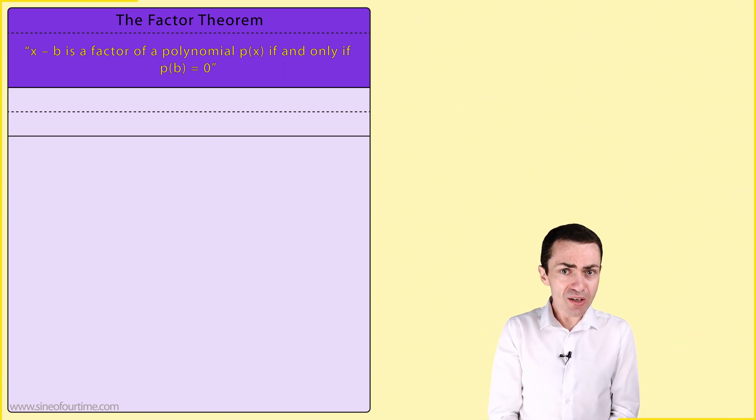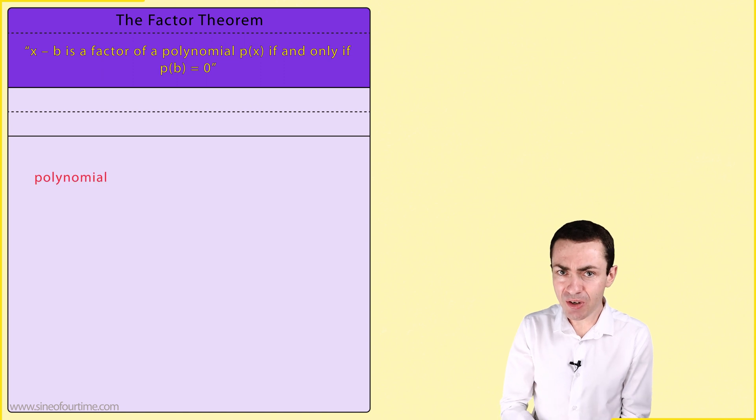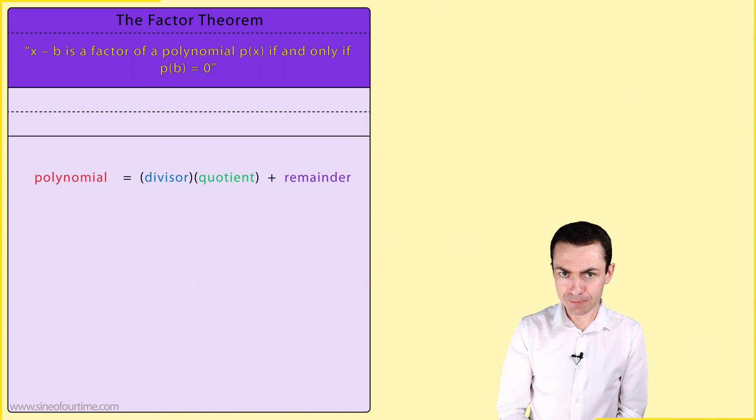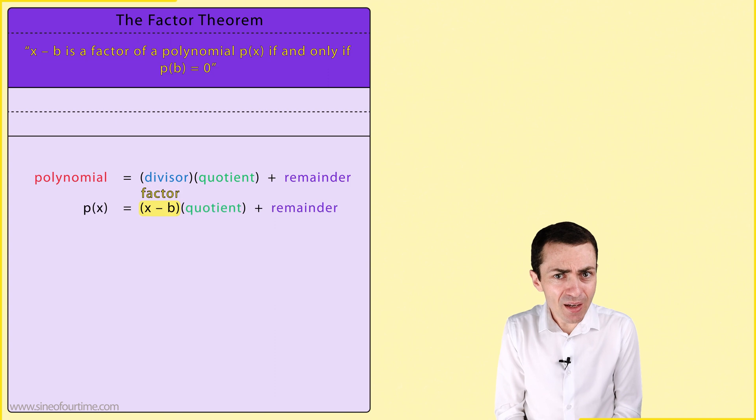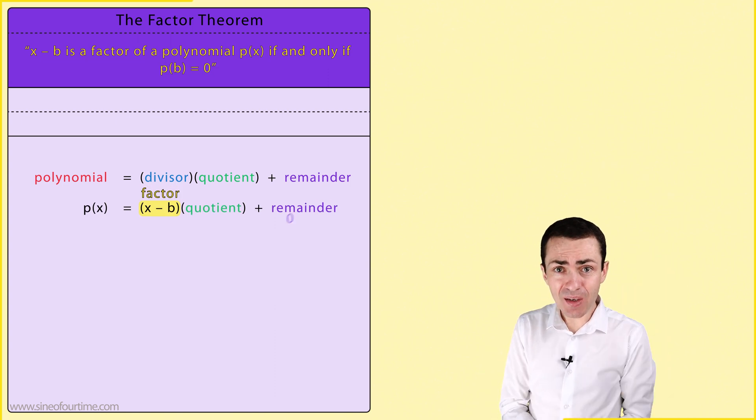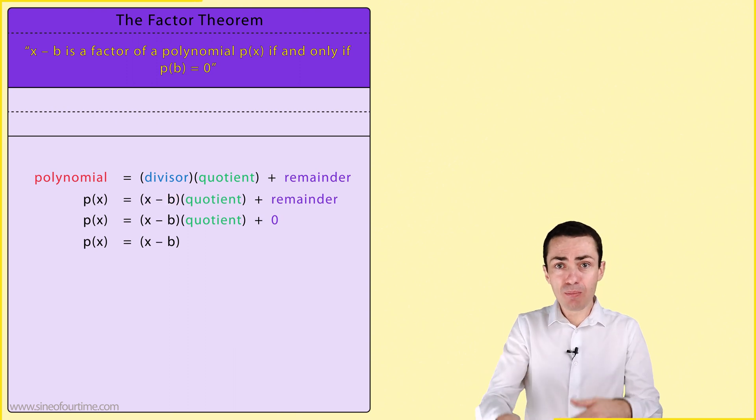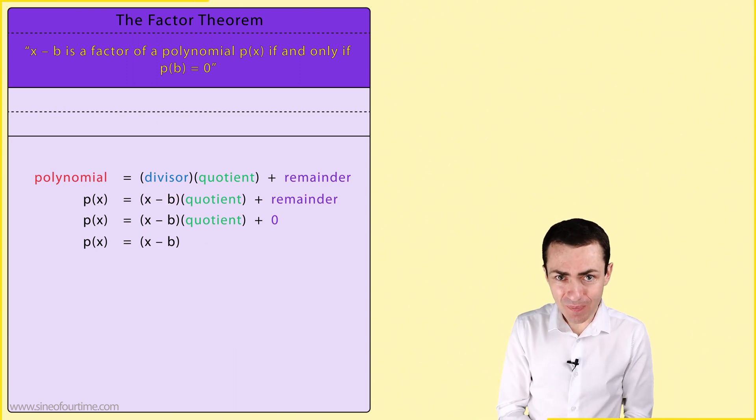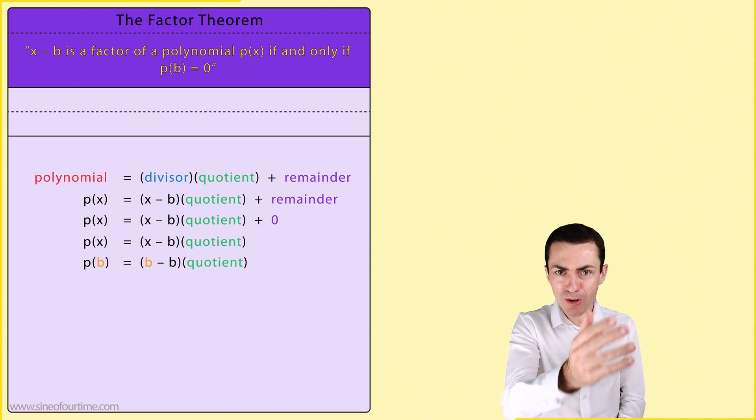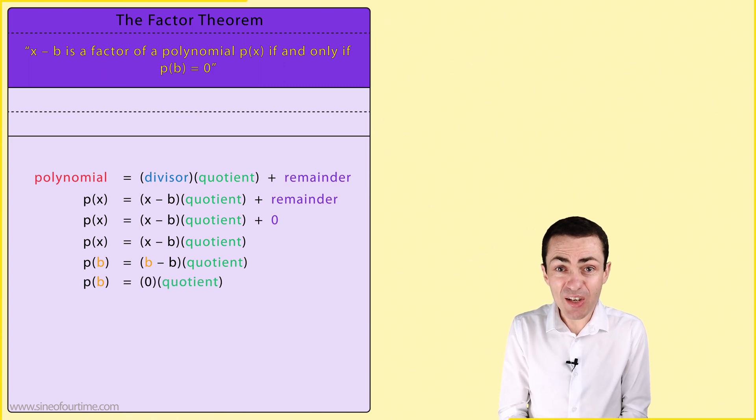In a previous video, we learned that a polynomial can be written as the product of a divisor and a quotient plus a remainder. So if a polynomial has x minus b as a factor, then by definition the remainder has to be 0, leaving us with x minus b multiplied by the quotient. Now if we simply substitute b in place of x, we are left with the case of b minus b multiplied by the quotient, which ultimately is just 0 multiplied by the quotient, which gives us 0.